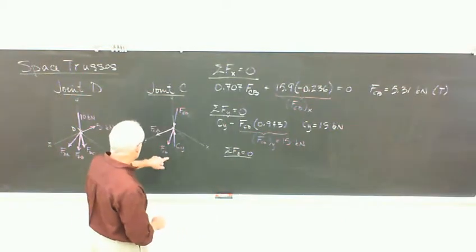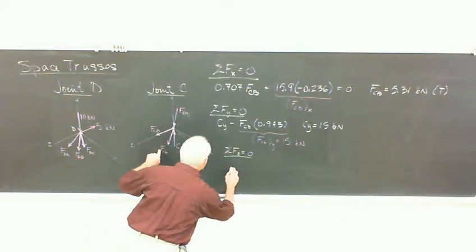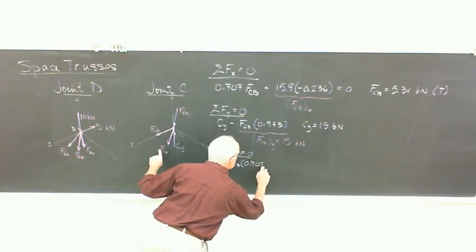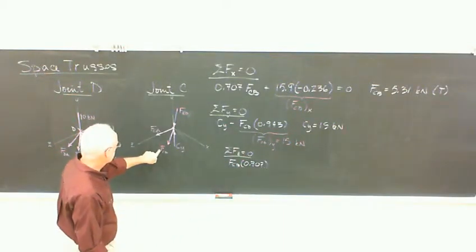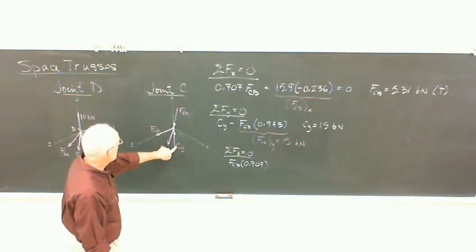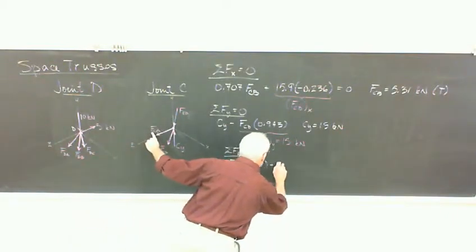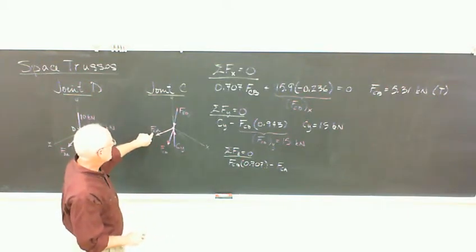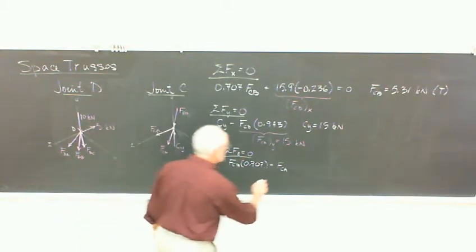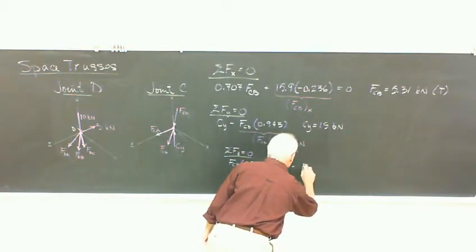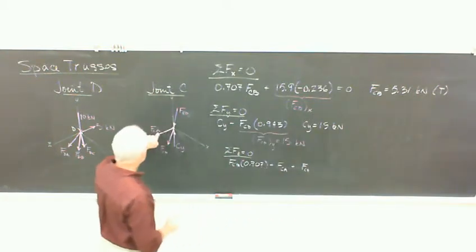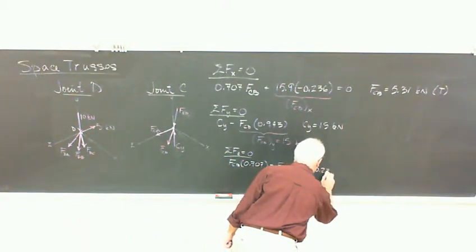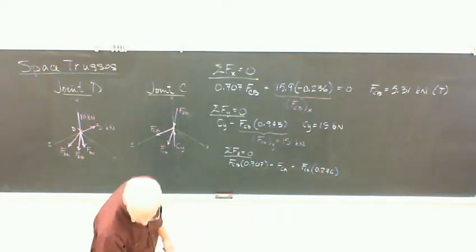In the z direction, we've got a little bit from CB. FCB, again, the 707. Z direction, there's no y. CA is entirely in the z direction, and we assume it's positive. And then there's a little bit of CD in the z direction, and it should be positive.